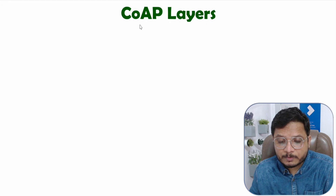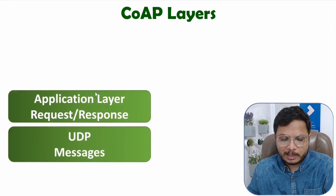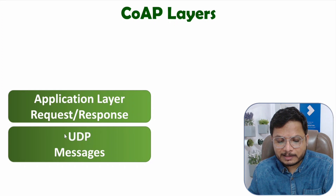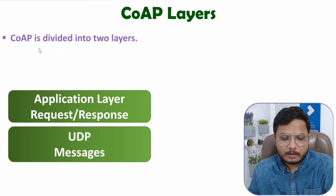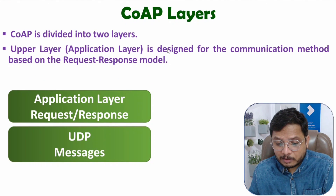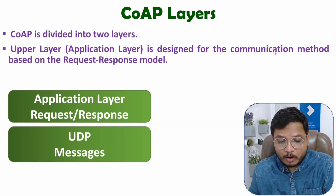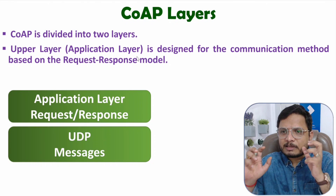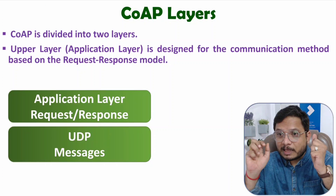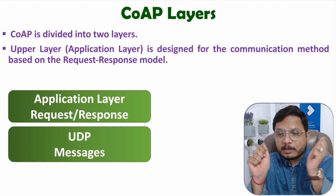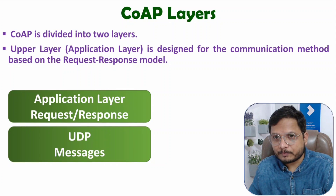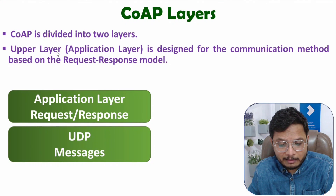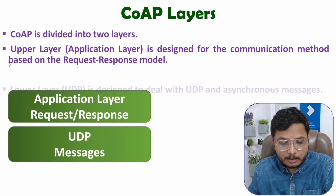Now I will explain the layers of CoAP protocol. There are two layers only. The upper layer is the application layer and the lower layer is the UDP layer. The upper layer is the application layer, designed for the communication model based on the Request-Response Model. The upper layer takes care of the request-response model, which defines the communication method: when a client wants to communicate with a server, it sends a request first, then the server gives a response.